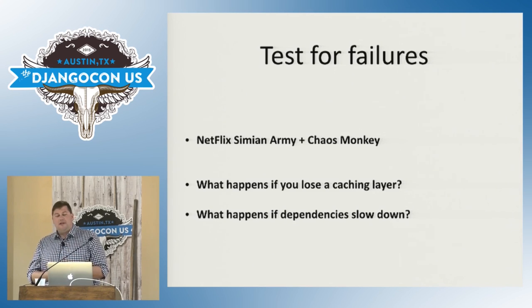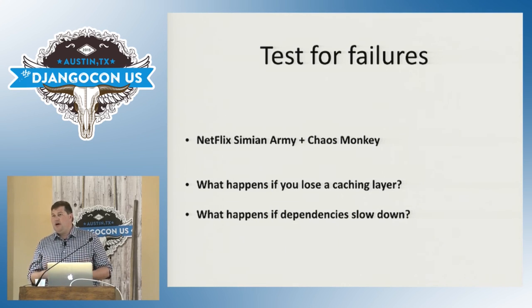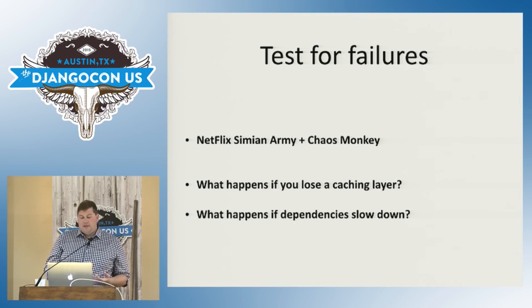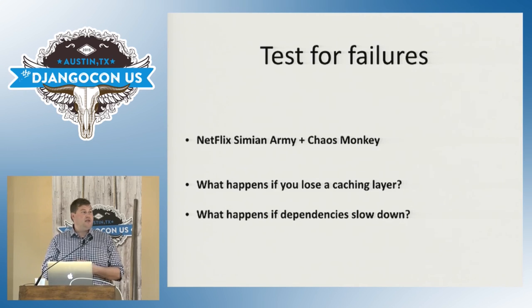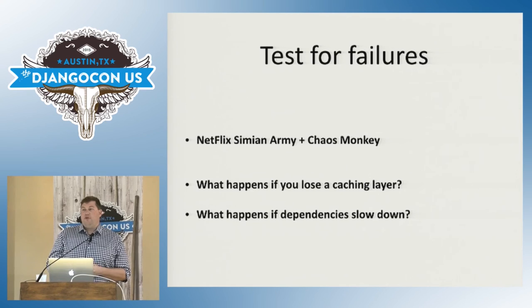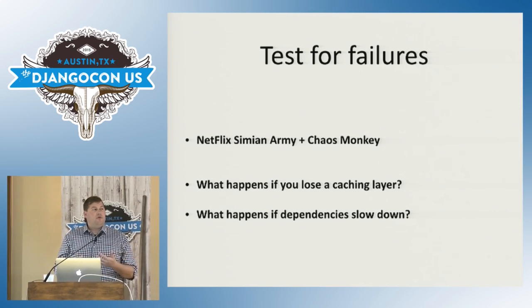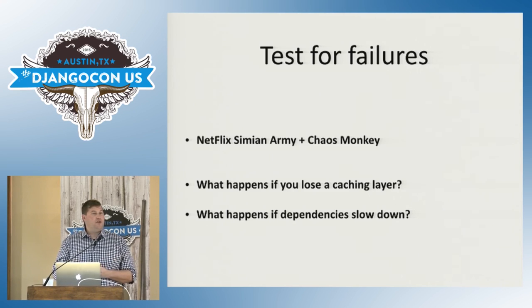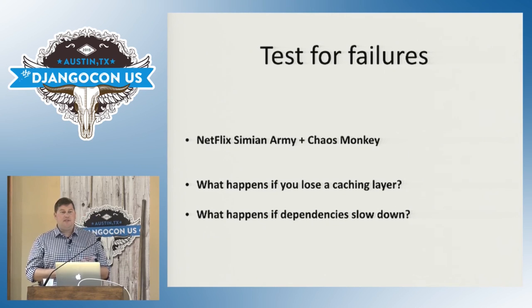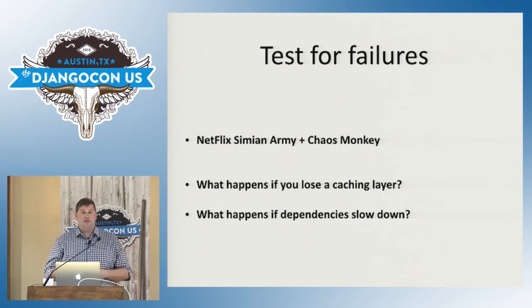You can't emphasize this enough: test for failures. Most people test under ideal conditions, but it's an imperfect world. Netflix released the Simian Army suite, including Chaos Monkey, which creates chaos inside your AWS setup. What happens if you lose your caching layer? What happens if your Memcache or Redis instances go down? What if PayPal's API slows down 3x — do you retry with exponential backoff, queue things up, or block on them? You often don't discover these issues until a production outage. Ask: if you run a load test and kill off your Memcache instances, does it surge on the database?